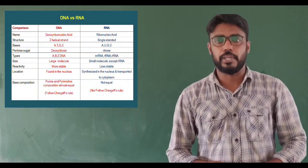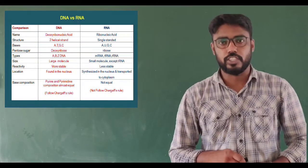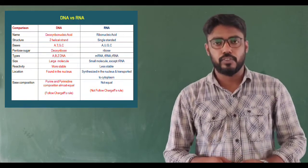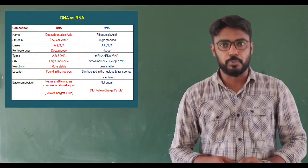Third, we can see the bases. In DNA, adenine, thymine, guanine, and cytosine are present. But in the case of RNA, thymine is not present. Instead of thymine, uracil is present.